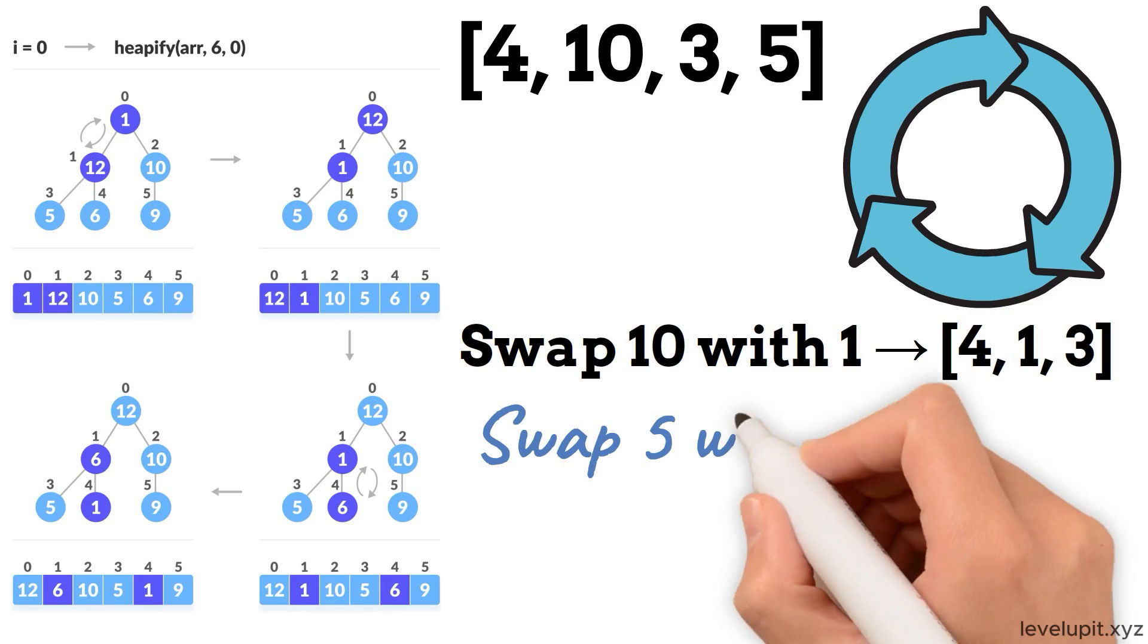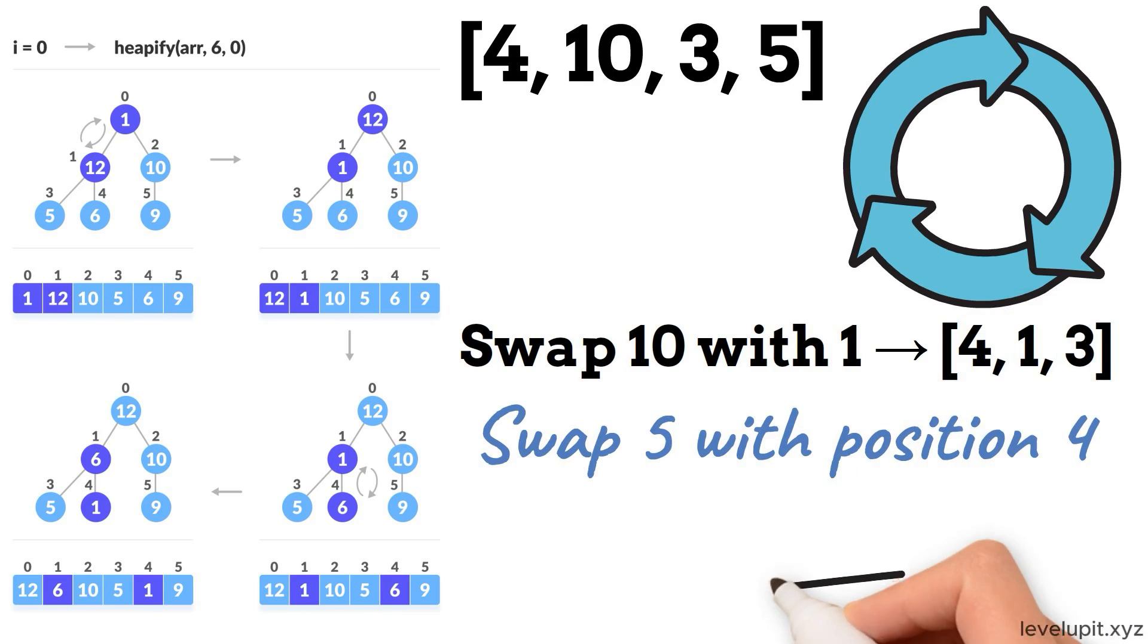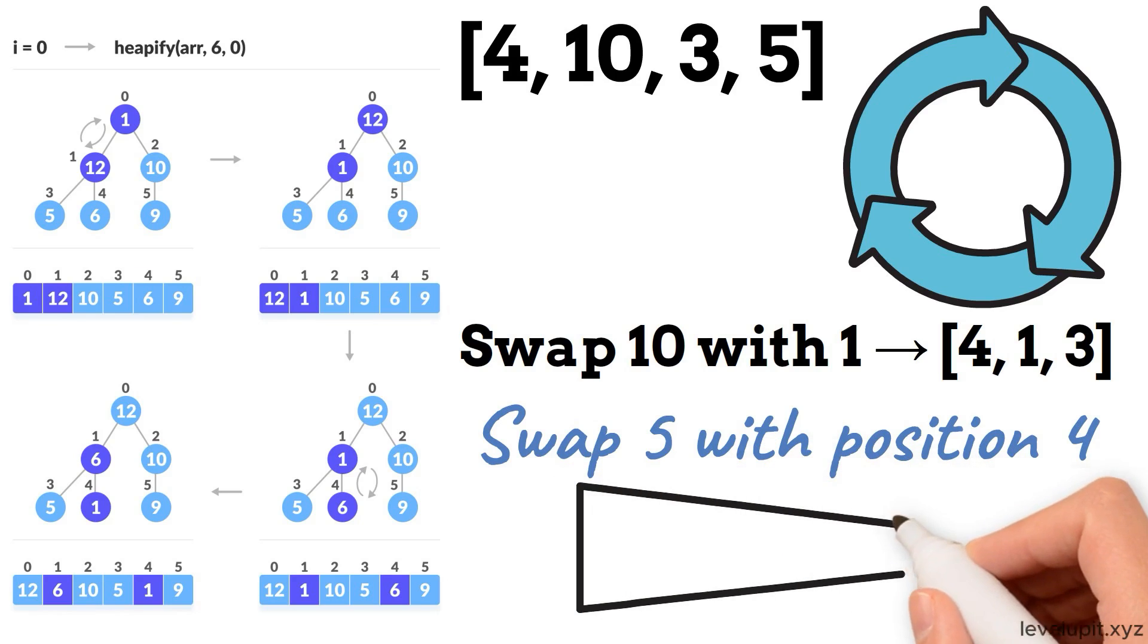Swap 5 with position 4 and continue. The sorted part grows from the end: at the end is 10, then 10, 5, then 10, 5, 4, and so on.